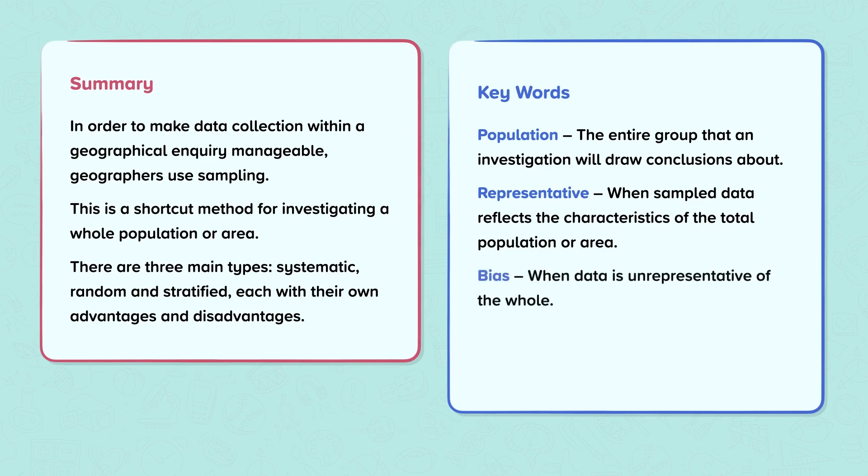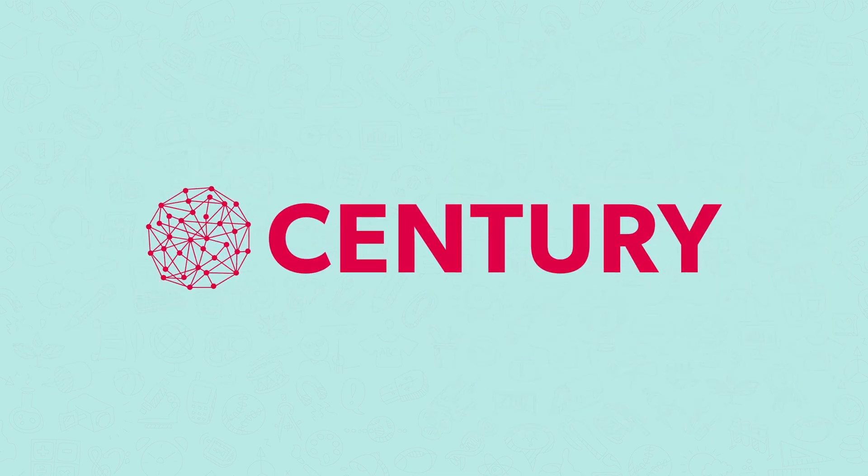Bias: When data is unrepresentative of the whole. Sample: A smaller portion of a population or area chosen to represent the whole.